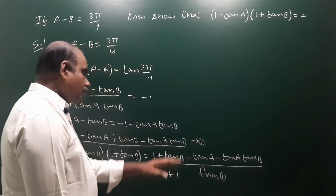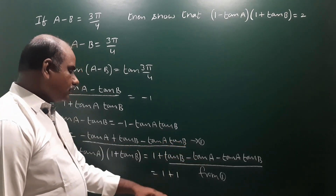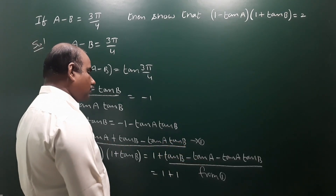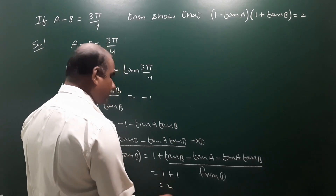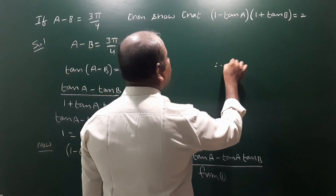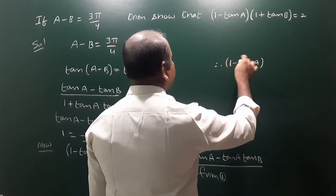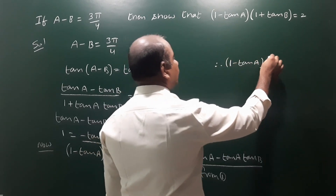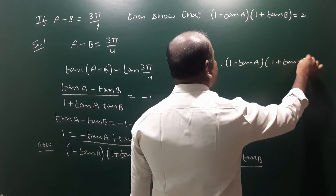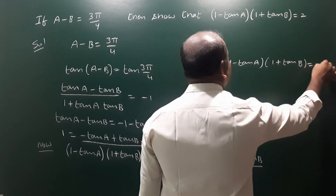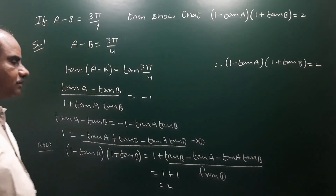Substituting, we get 1 plus 1, which is equal to 2. Therefore, (1 minus tan A) into (1 plus tan B) is equal to 2. That is the answer.